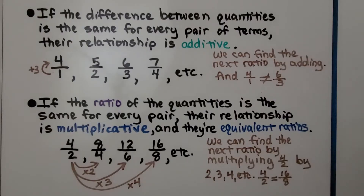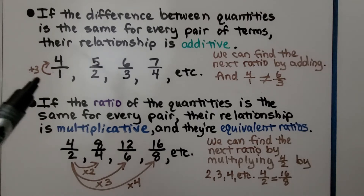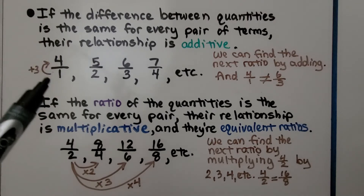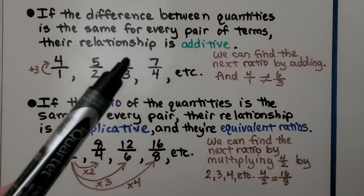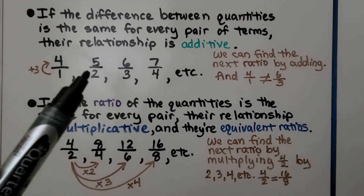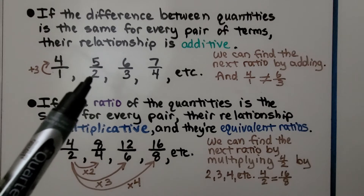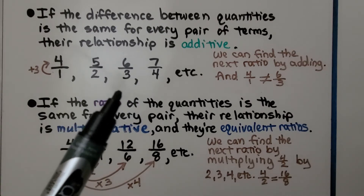If the difference between quantities is the same for every pair of terms, their relationship is additive. Here we have 4 over 1 — there's a difference of 3 between 4 and 1. Here we have 5 over 2, 6 over 3, 7 over 4. The first term has a difference of 3 to the second term, and we can find the next ratio by adding.